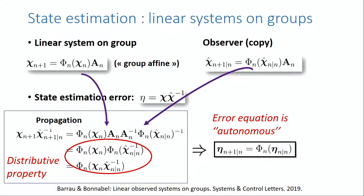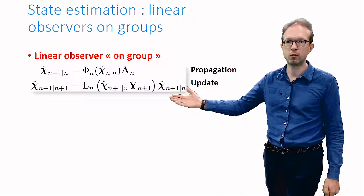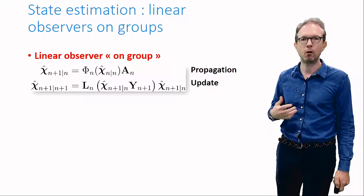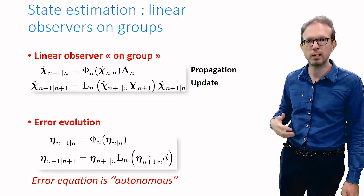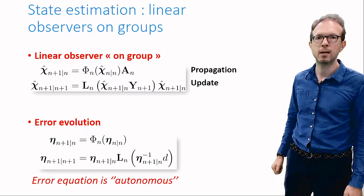It reminds much of the linear case and may be viewed as a simple generalization of the linear error autonomy property. This way, we have shown the error evolution is autonomous for the class of linear systems on groups at propagation step. At the update step, instead of adding the correction term, we can nudge the estimate towards the true state by also using matrix multiplication. This results in what may be referred to as a linear observer on groups. Similarly to the propagation step, the error may then be proved to evolve autonomously at the update step too for a large class of outputs.